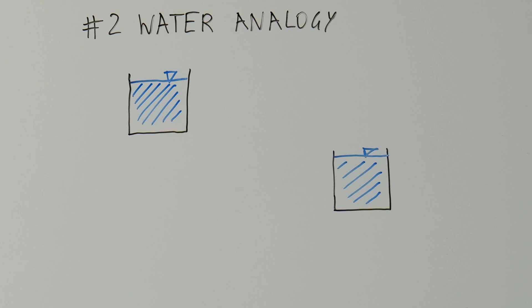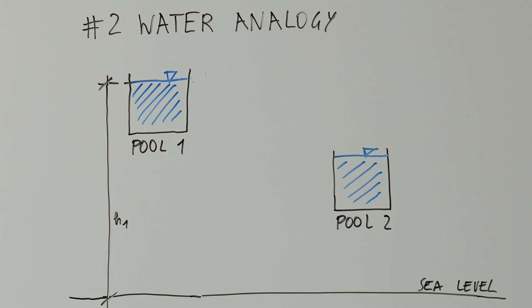Imagine we have two pools at different altitudes connected by a water pipe. Pool 1 is at a higher altitude and thus a higher potential energy level than Pool 2. However, knowing the altitude of the water level in Pool 1 alone doesn't tell us how fast the water will flow from Pool 1 to Pool 2. To determine the flow rate, we also need to know the altitude of Pool 2.